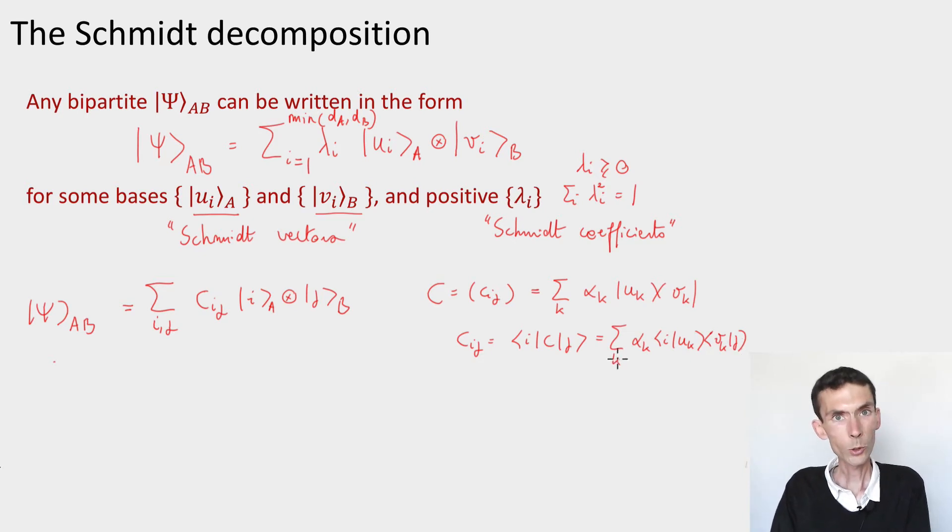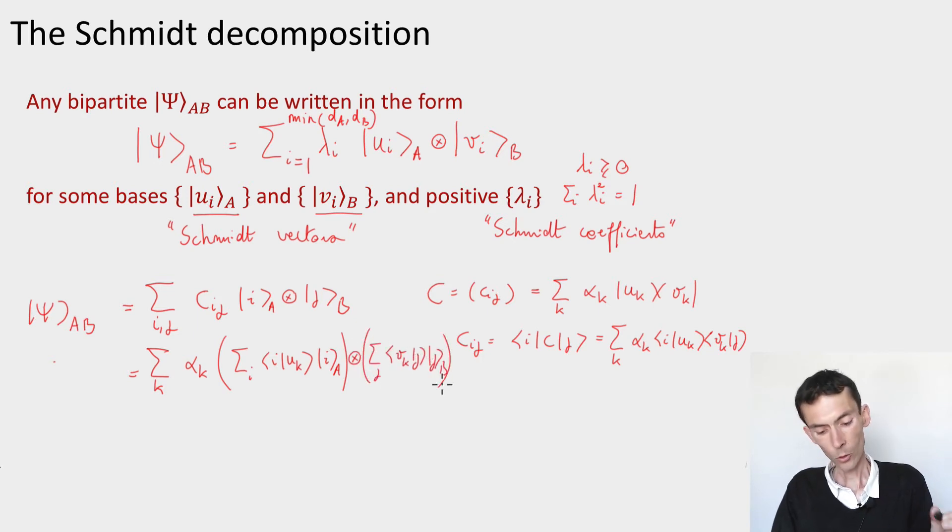So if I plug in this new expression for the coefficients back into my formula for the state psi, what do I get? I get the sum over ij of Cij, and Cij I'll re-express using the formula that I got. And you can verify that then the decomposition I can rewrite as sum over k of alpha k, and then I would get sum over i of i uk i, tensored sum over j vk j, j in the B system.